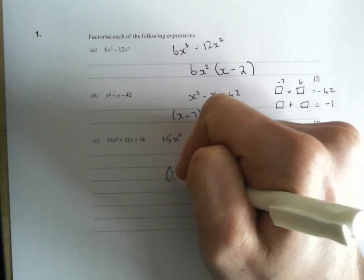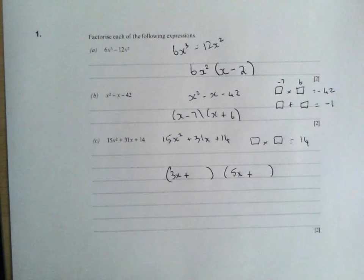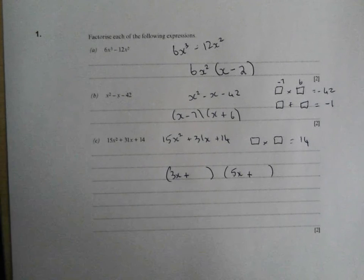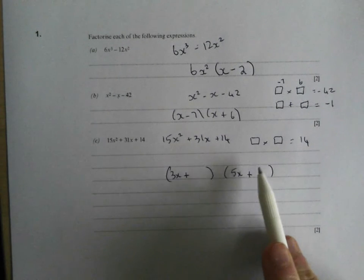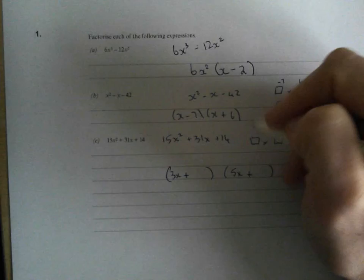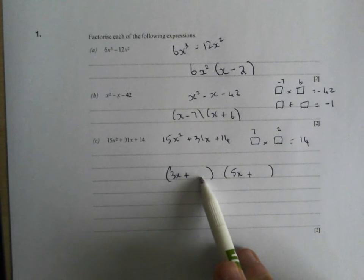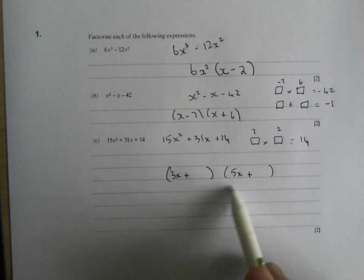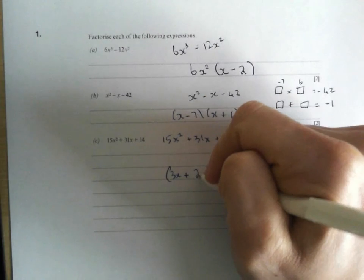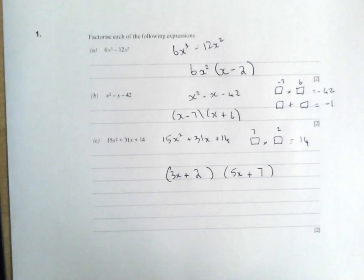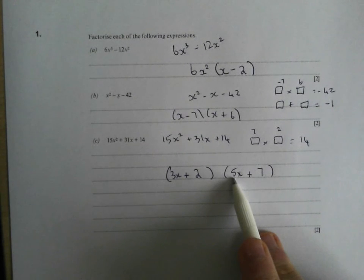So I might try 3x and 5x. That's going to give me my 15x squared that I need. I've just got to make sure I get up to this 31x's. Well, I'm going to work on the assumption that it's going to be something to do with 7 and 2. So if I do 5 lots of 7, I'd get 35x's. Well, that's too big. So say I put the 2 in there and the 7 there. Does that work? And then I just check it. 3 lots of 5x. 3x times 5x, 15x squared. That's good news.